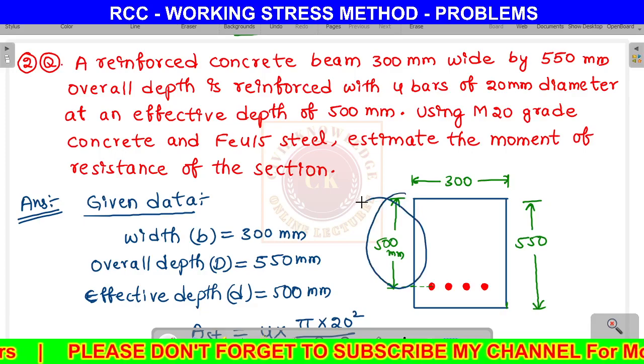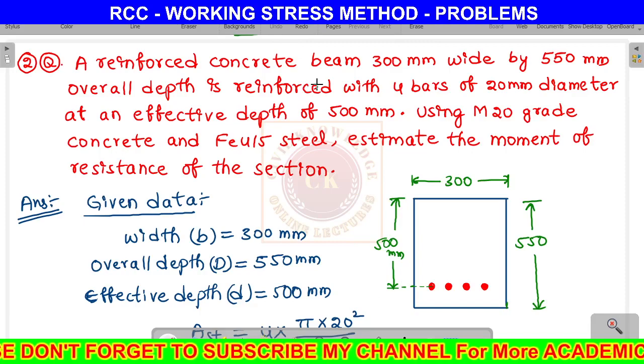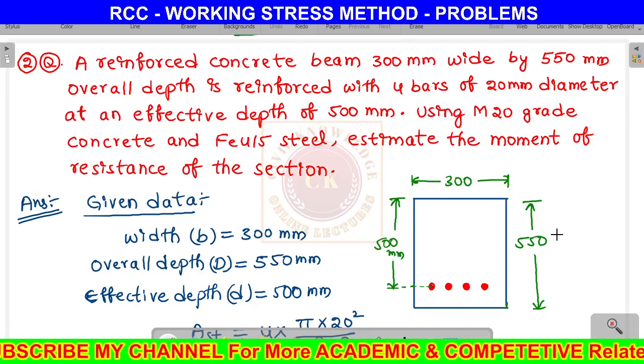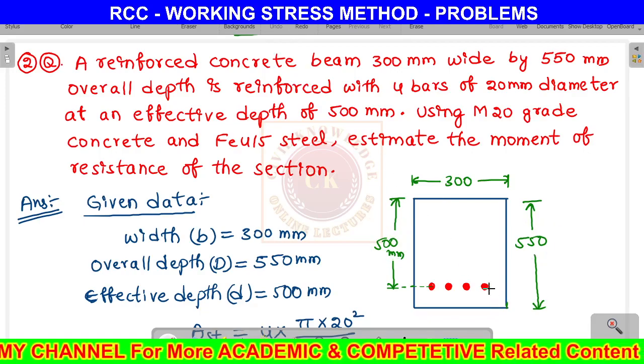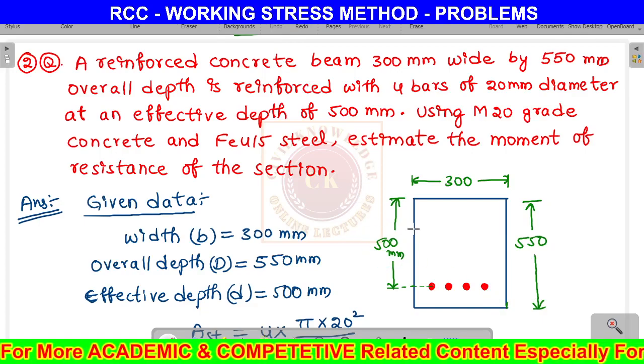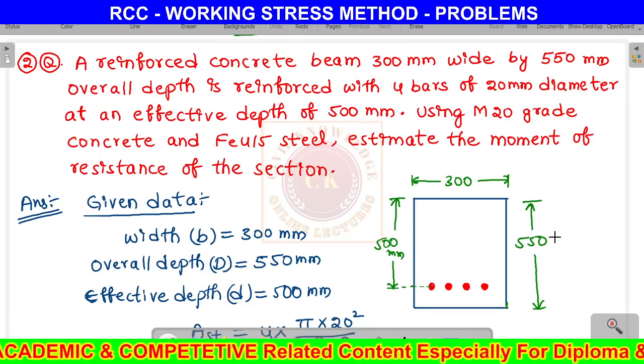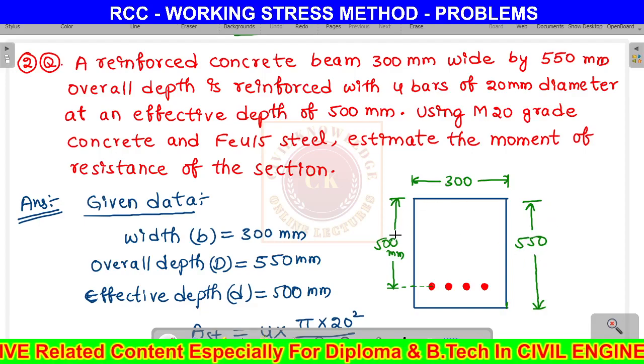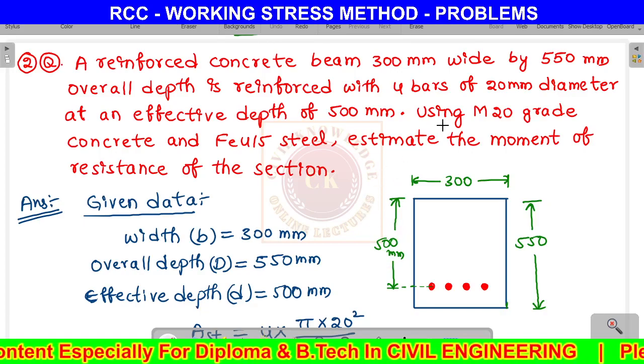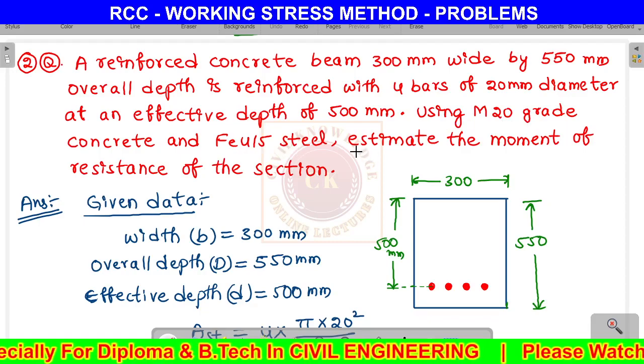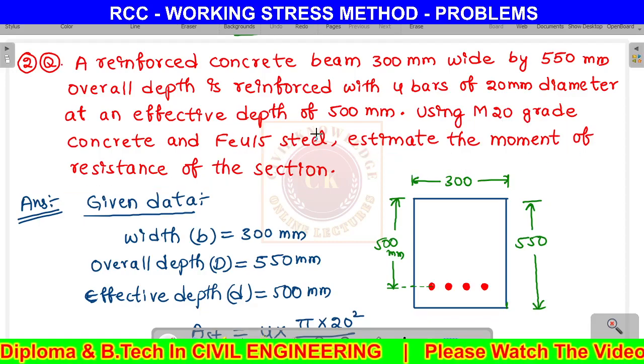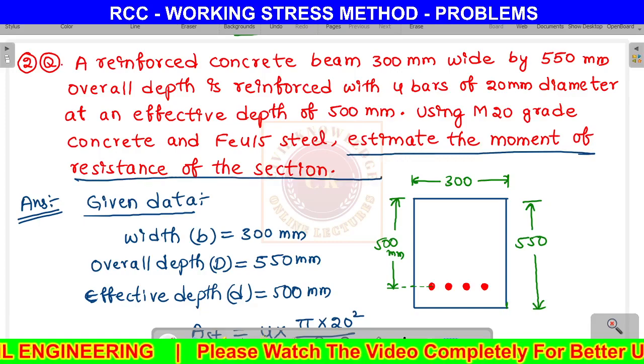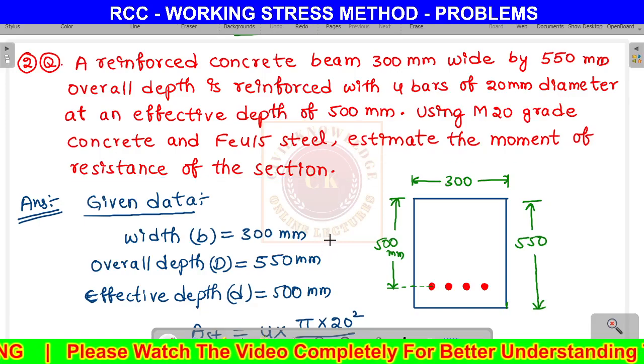The effective depth is 500 mm. Using M20 grade concrete and Fe415 steel, estimate the moment of resistance of the section. We need to find out the moment of resistance.